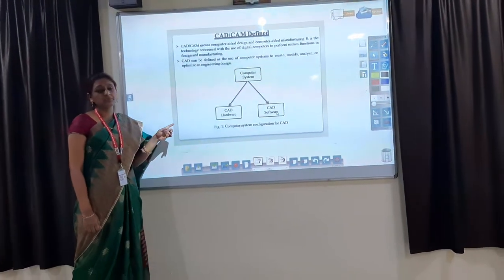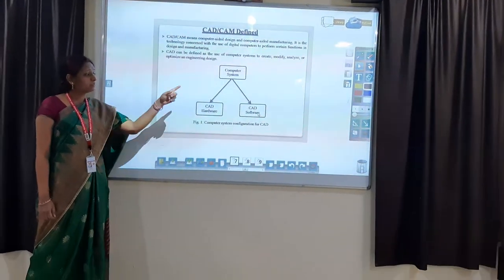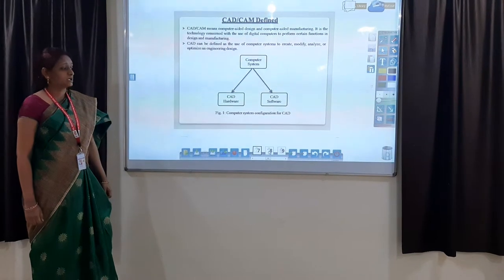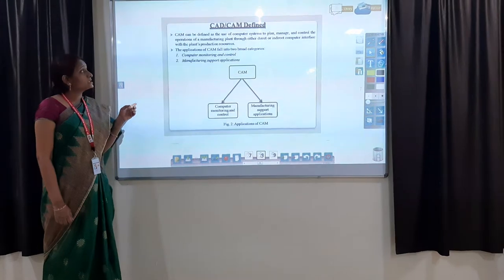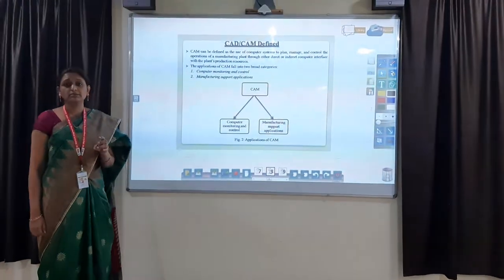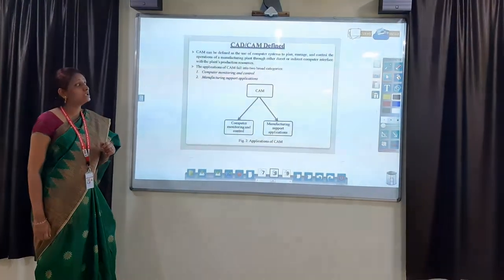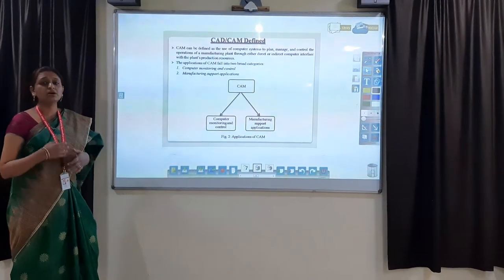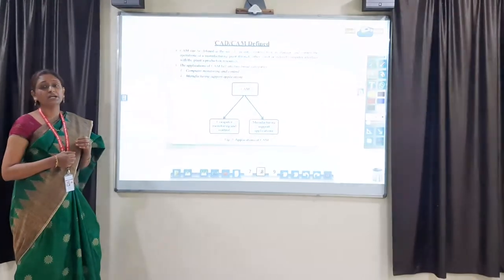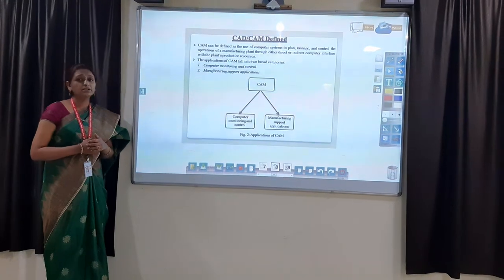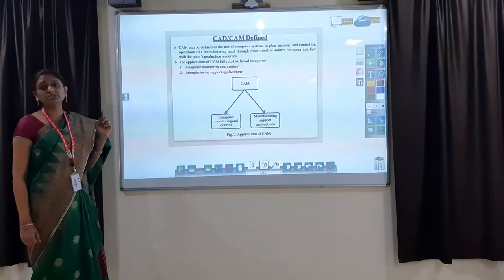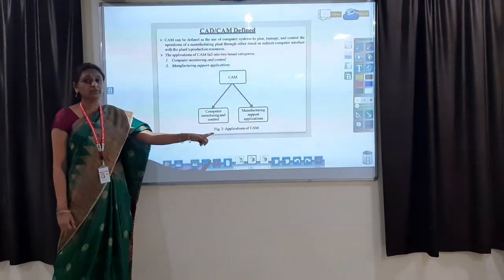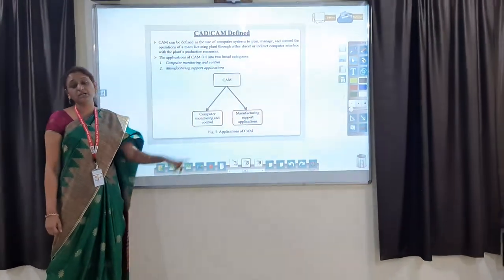Since we are using computers, let us see what is the configuration of a computer system. A computer system consists of computer hardware and also computer software — this is known as the configuration of computers for CAD. Now let us see what is CAM. CAM is defined as the use of computers to plan, manage and control the operations of a manufacturing plant through either direct or indirect interface with the plant's production process. CAM is broadly classified into two types: computer monitoring and control, and manufacturing support applications.